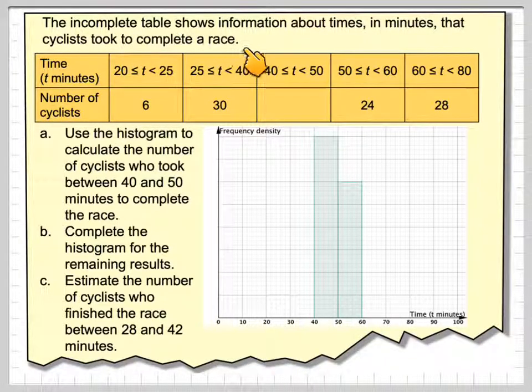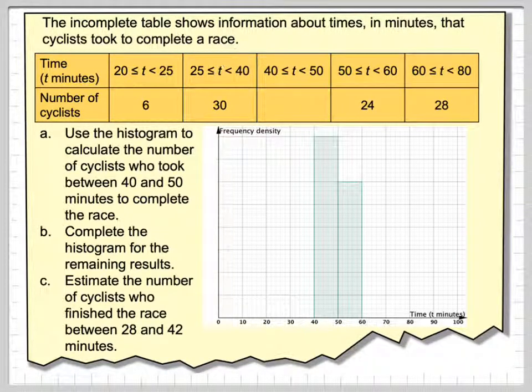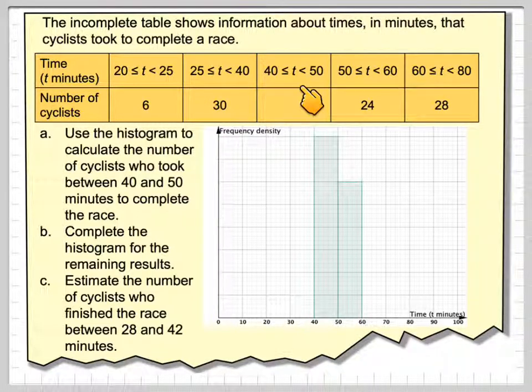The incomplete table shows information about times in minutes that cyclists took to complete a race. Here we've got a table with time T in minutes: between 20 and 25, 25 and 40, 40 and 50, 50 and 60, and 60 and 80. We've got the times here with one missing, and we've got a histogram to represent two of the classes.